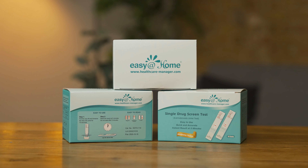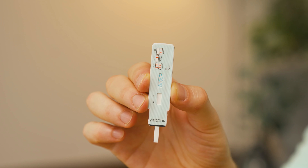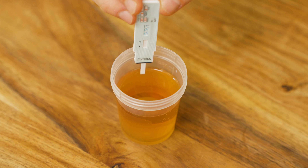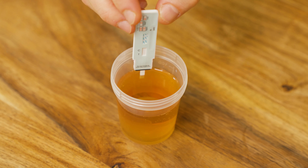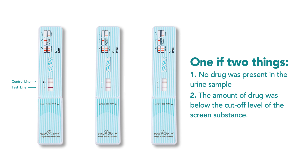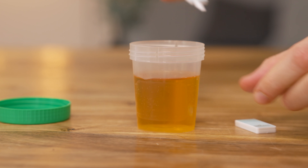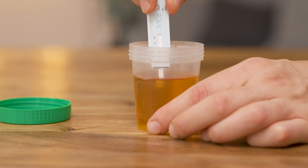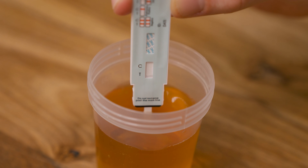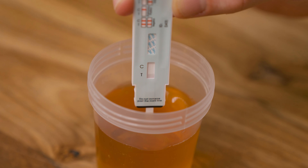If the sample was collected properly and the test was performed according to the directions, a negative result means one of two things: either no drug was present in the urine sample, or the amount of the drug was below the cutoff level of the screened substance. The cutoff level is a predetermined threshold used to determine whether the drug concentration is significant enough to be considered positive.